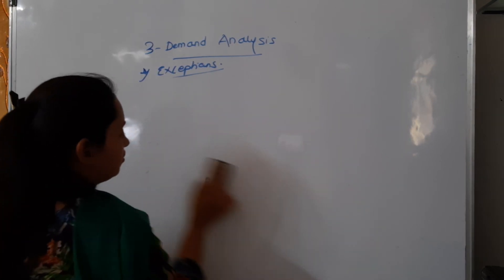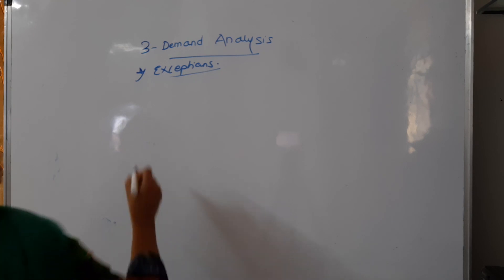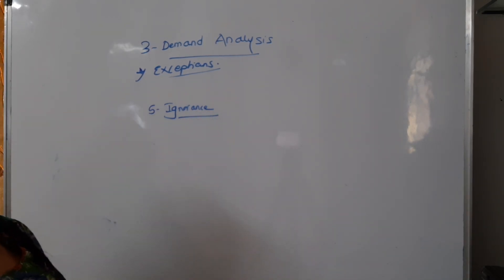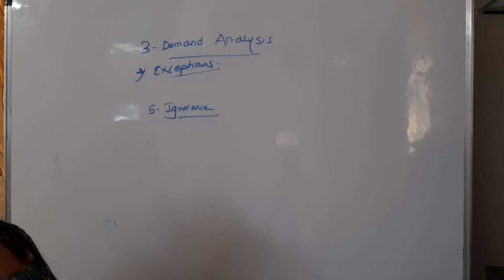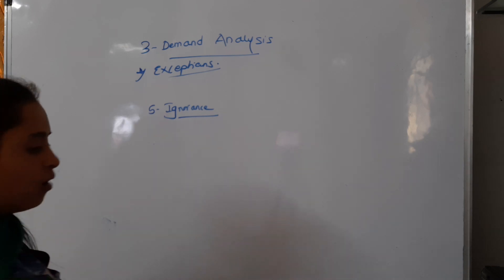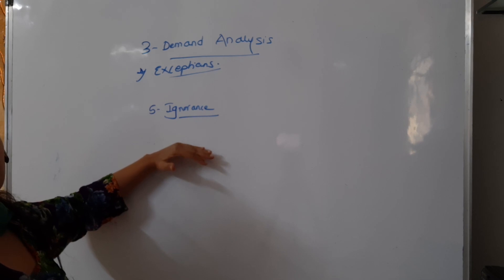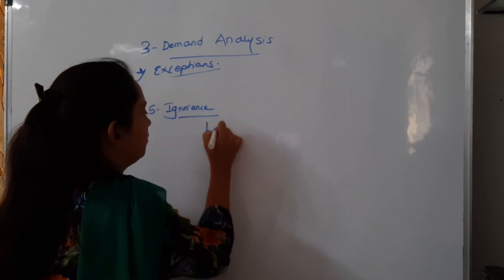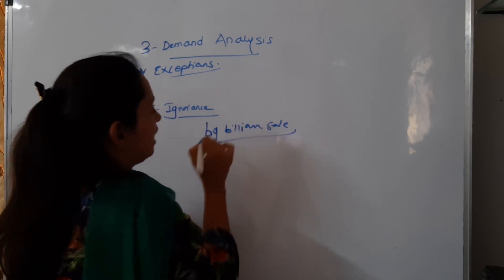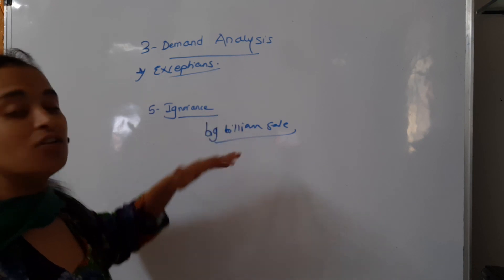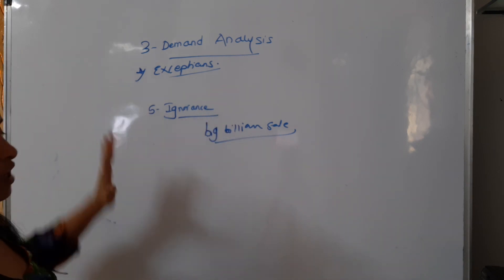These are all exceptions of the law of demand. The next exception is ignorance. Sometimes, due to ignorance, people buy more of a commodity at a higher price. This may happen when a consumer is ignorant about the price of the commodity at other places. For example, people are not aware about the Big Billion Sale — so those deals go unnoticed and ignored. This is also an exception to the law of demand.